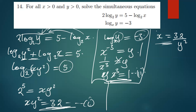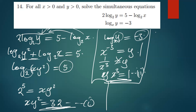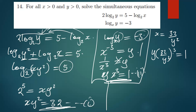So x being equal to 32 over y². I'm going to replace this in equation two: y multiplied by (32 over y²) to the power 3 is equal to 1.